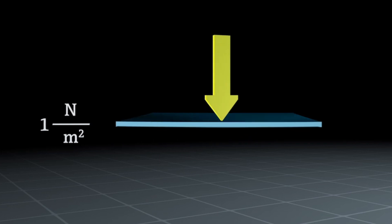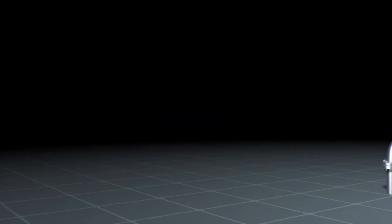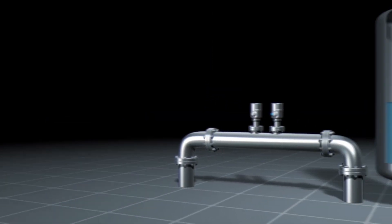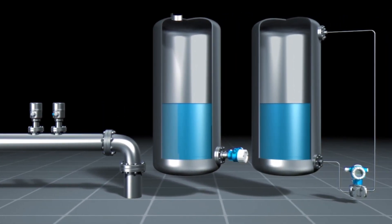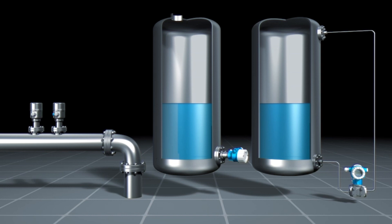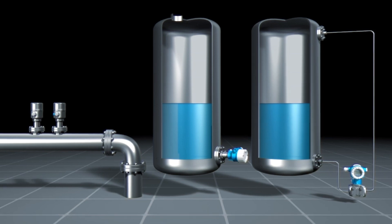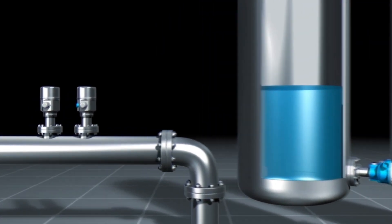Pressure is the result of a force acting on an area. Pressure instruments may be used to detect absolute and gauge pressures and to determine pressure variables and levels in tanks. First of all, let's have a closer look at the mode of operation of this measuring method using the example of absolute and gauge pressure.